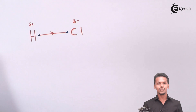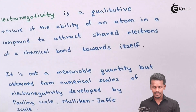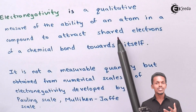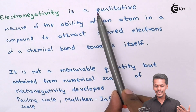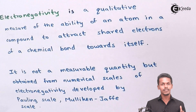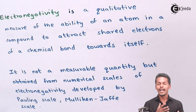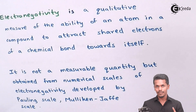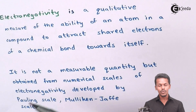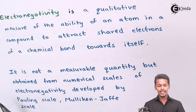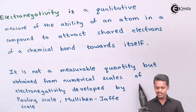Talking more about what electronegativity actually is: electronegativity is a qualitative measure of the ability of an atom in a compound to attract shared electrons of a chemical bond towards itself. It is basically a qualitative measurement of ability — meaning it depends on which atom we are concerned about. For example, in hydrogen fluoride, the fluorine atom has more tendency to attract electrons from the shared pair towards itself. It is not a measurable quantity but is obtained from numerical scales of electronegativity.